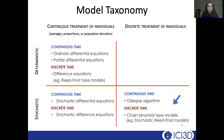To orient ourselves in the model taxonomy, we're going to start with chain binomial-type models, in particular Reed-Frost. But first, we'll review the deterministic version of this model that was introduced briefly.